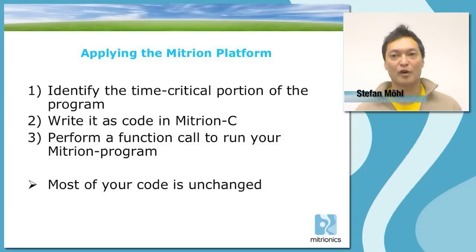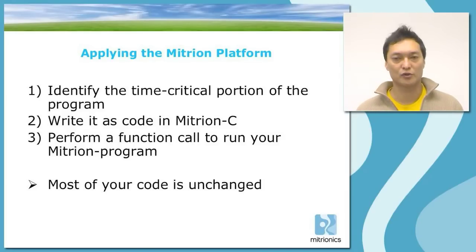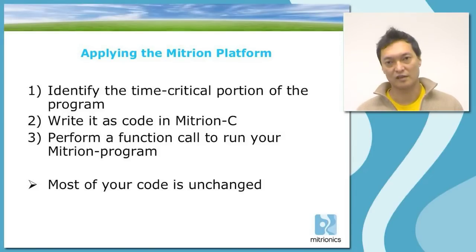I'm going to mention a few words about programming in the Mitron Virtual Processor. To apply the Mitron platform, the basic method is to identify the time-critical portion of your program, write that time-critical portion as code in Mitron C, and then perform a function call from your standard program to the Mitron program. There is an API developed that will help you do this very simply — it only contains about 10 different function calls.